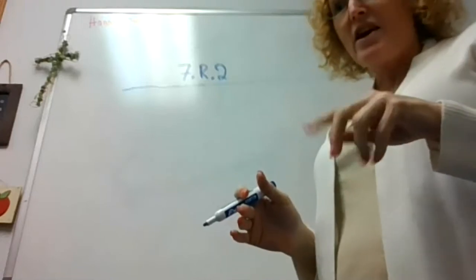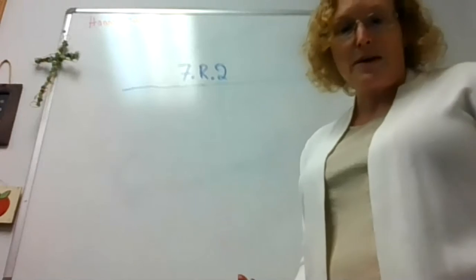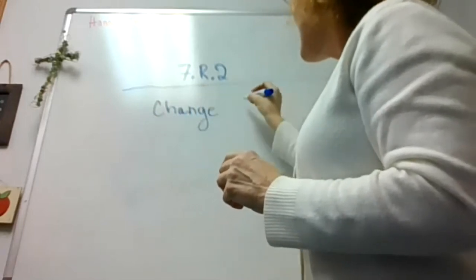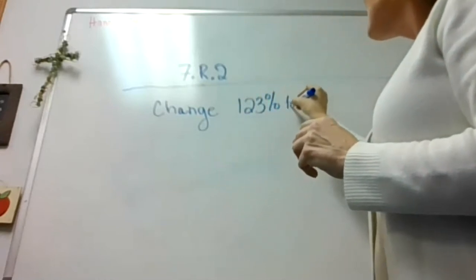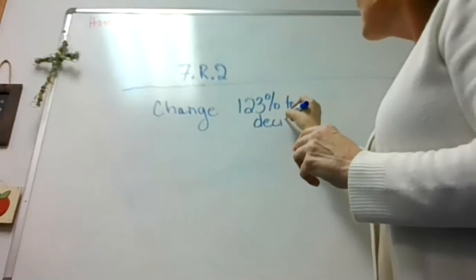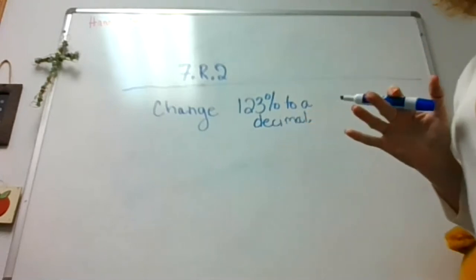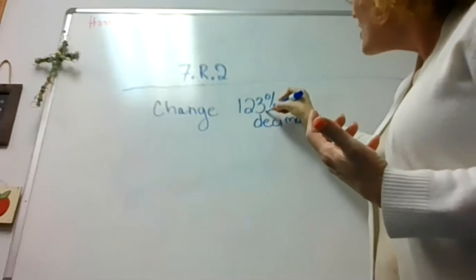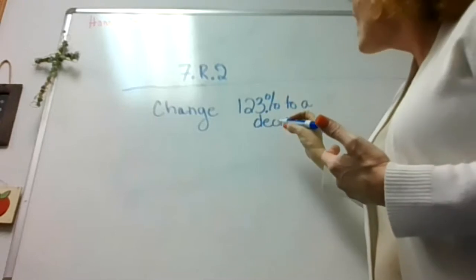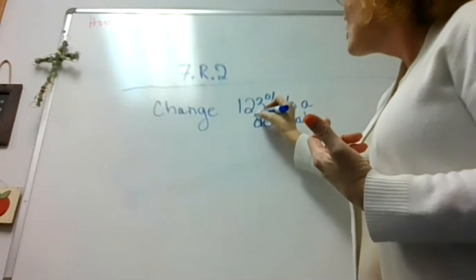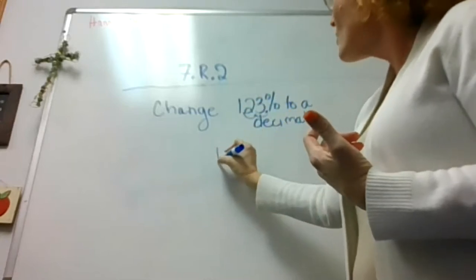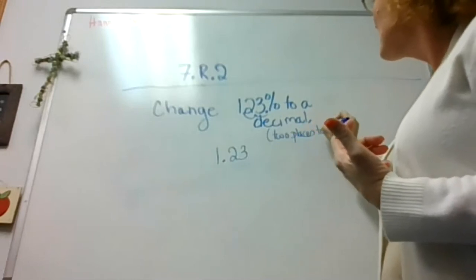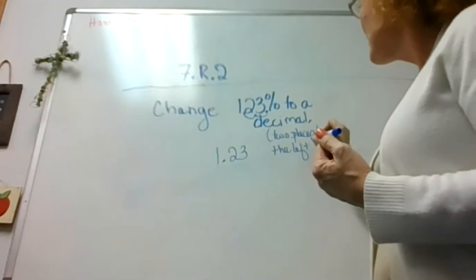The reason we have that in there is because you have to do that in section 7.2 and we don't want that to be an issue. So if I were to give you something that says change 123% to a decimal — when they give you these, don't make it any harder than it is. It really just means change it to a decimal. All you have to remember: if you look at 123%, the decimal is right there after the 3, so to change it to a decimal you move the decimal two places to the left. That would be 1.23.